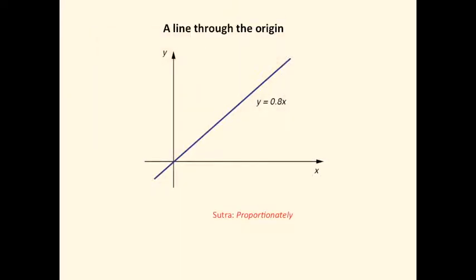Here's an example: a line through the origin with equation y equals 0.8x. The sutra here is proportionately, because there is a proportionate relationship between each x coordinate of a point on the graph and its y coordinate.